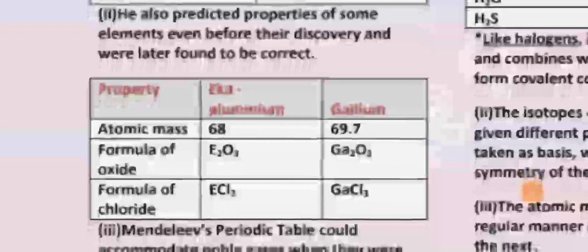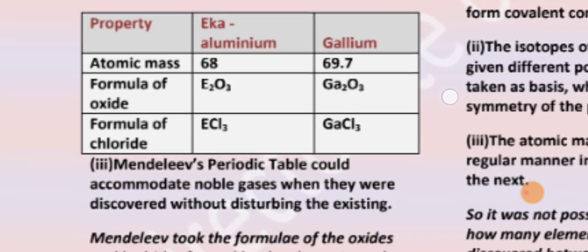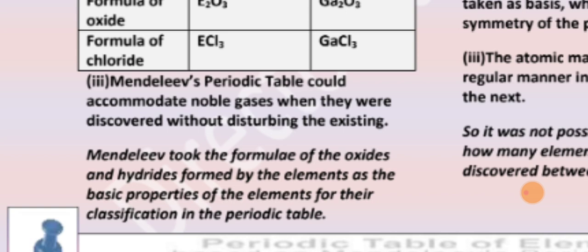Mendeleev predicted properties including atomic mass 69.7, formula Ga2O3, chloride GaCl3, so that their discovery, what he predicted was correct. Third, Mendeleev's periodic table could accommodate noble gases when they were discovered without disturbing the existing table.